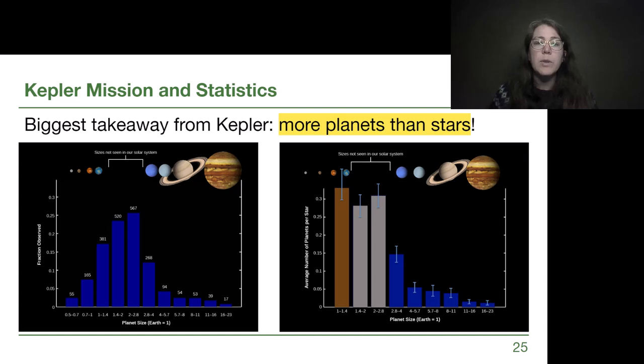So one of the biggest takeaways from the Kepler mission and all of the statistics that were gained from it are that there are more planets than there are stars in our galaxy. Now let's take a brief moment to kind of recognize what that means for us. Our own sun has eight planets but that means that we could still find six other stars that have no planet systems at all and overall in those systems we would have more planets than stars.